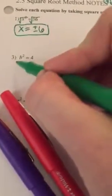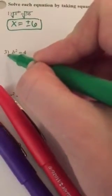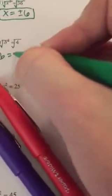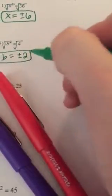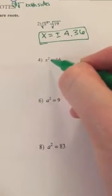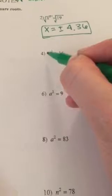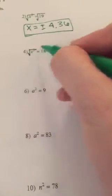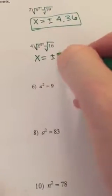b squared is all by itself — we can't add or subtract, we can't multiply or divide. Square root both sides: b equals plus or minus 2. Next, x squared is by itself, nothing's being added or subtracted, nothing's in front being multiplied. Square root: x equals plus or minus 4.